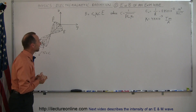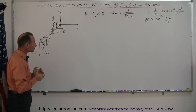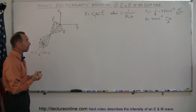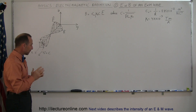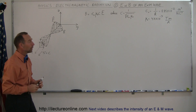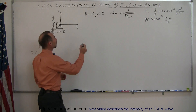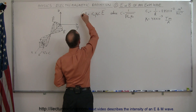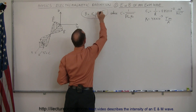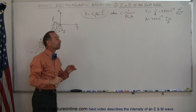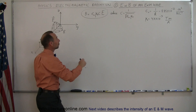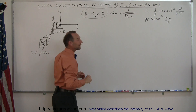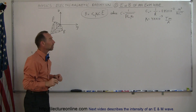Waves travel through space like that. To describe that, we have to understand the relationships between the two. This equation right here describes the relationship between the magnitude of the magnetic field oscillations and the magnitude of the electric field oscillations.